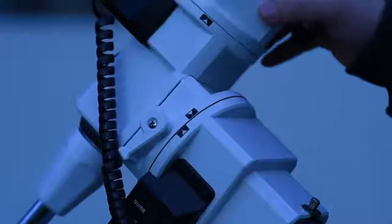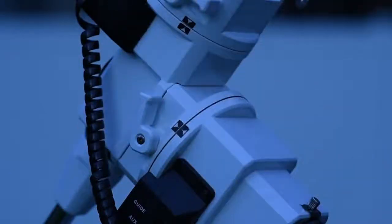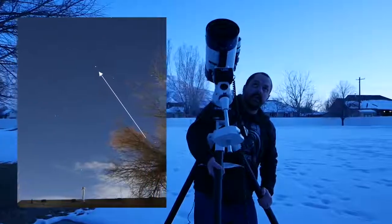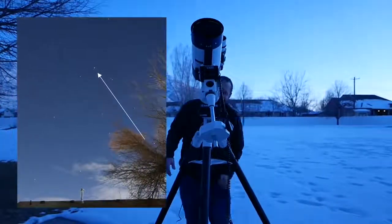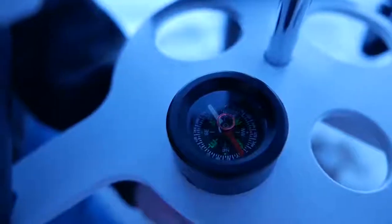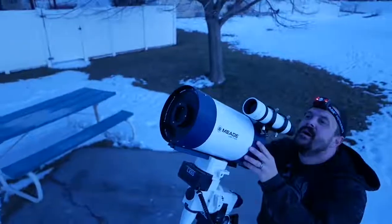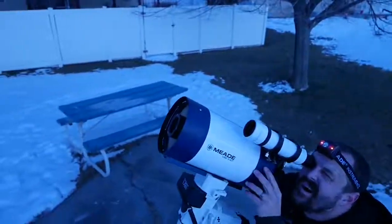To roughly polar align your LX85, place the telescope in the home position. In this position, the registration marks on each axis should be aligned. Without unlocking the right ascension and declination lock levers, roughly position the LX85 so that it's facing true north. You can use the included magnetic compass to get you close, but remember the compass will point towards magnetic north and not true north.